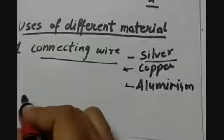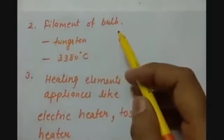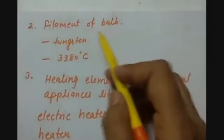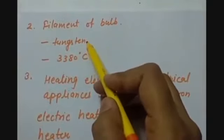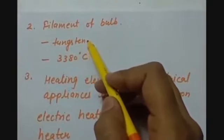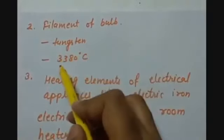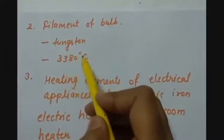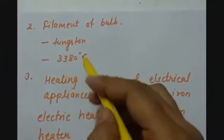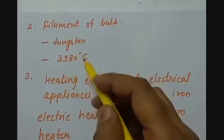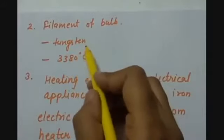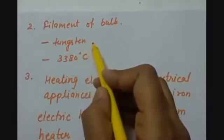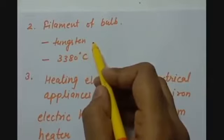Then we have the filament of a bulb. The filament of a bulb is made with tungsten. Tungsten is a metal which has a very high melting point, that is 3380 degrees Celsius, which is very high. Because of having such a high melting point, tungsten does not burn or oxidize at a very high temperature.